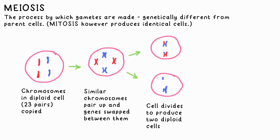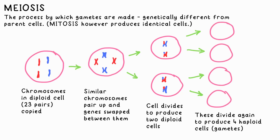The cell then divides to make two diploid cells, which then divide again, along with the chromosomes themselves, to make four haploid cells, ready to fuse with another gamete.